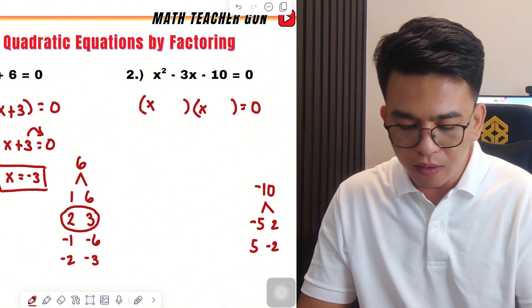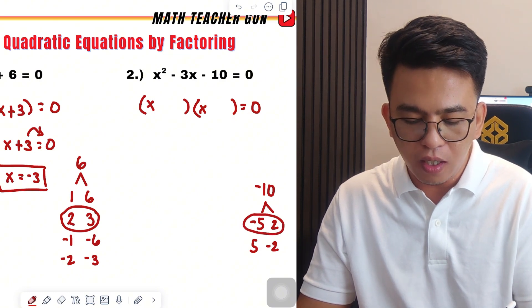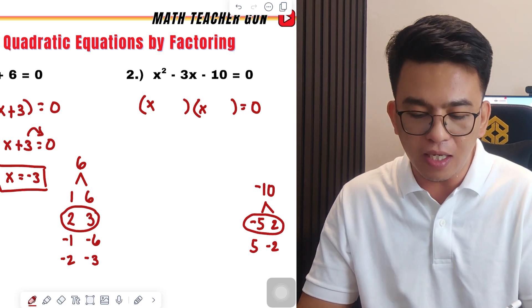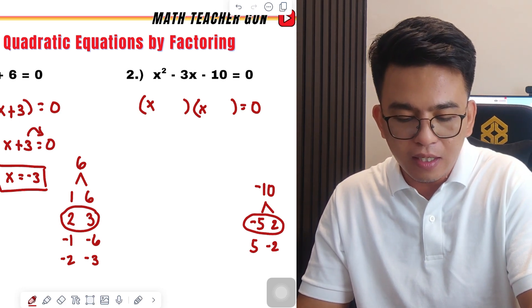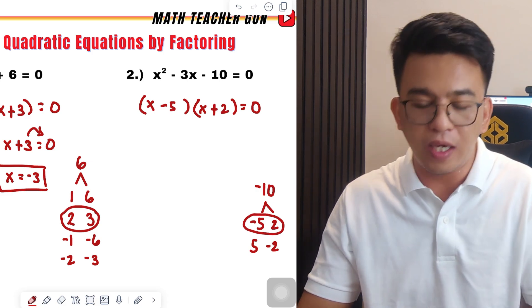So, right now, if we will add negative 5 and 2, it will give us negative 3. Meaning, what we need here is negative 5 and positive 2. In this case, we can now proceed with the values of x.